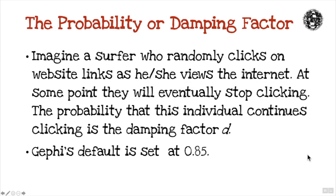Now, the probability or damping factor. The best way to explain this is with a little bit of a scenario. Imagine a surfer who randomly clicks on website links as he or she views the Internet. At some point, they will eventually stop clicking, and the probability that this individual continues clicking is the damping factor, i.e. D, or in Gephi's terms, the probability. Gephi's default value is 0.85.